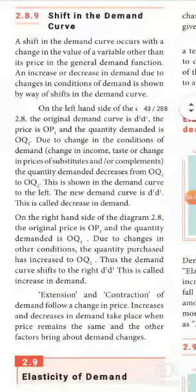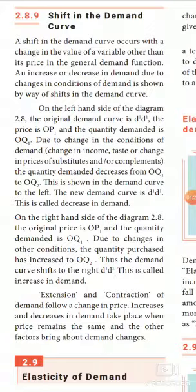Extension and contraction of demand follows a change in price. Extension or contraction of demand occurs due to changes in price — the quantity demanded may increase or decrease. Quantity changes because of price, while other things such as income, taste, and preference remain the same.